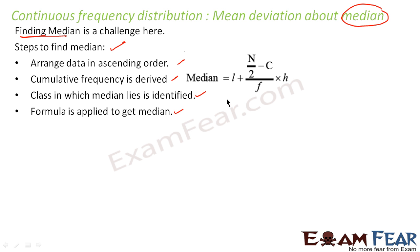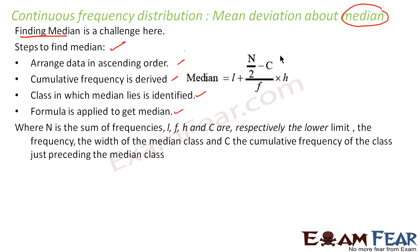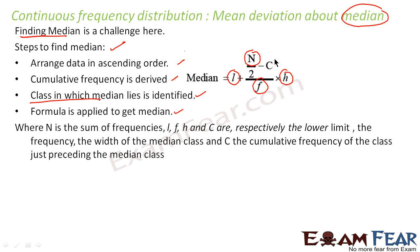Once we have the class, we apply the formula. The formula involves n, which is the sum of all frequencies. The values l, f, and h all belong to the class in which the median lies: l is the lower limit, f is the frequency, and h is the length or width of the class. C is the cumulative frequency of the class just preceding the median class.